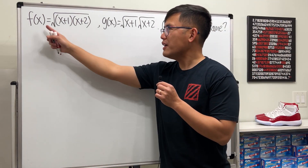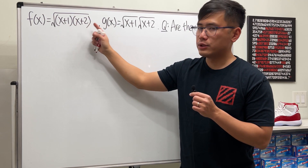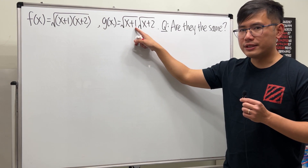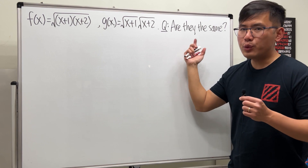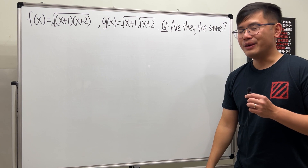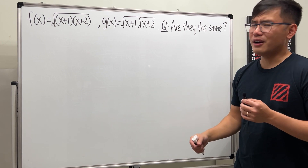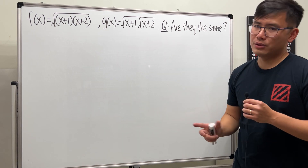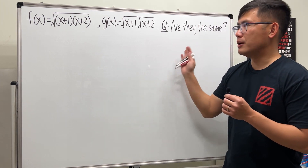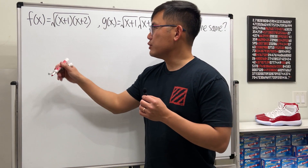We have two functions. The first one is f(x) equal to the square root of (x+1)(x+2). For the second one, g(x), we have two square roots: the first with x+1 inside and the second with x+2 inside. The question is: are they the same function? You have to be really careful with these kinds of questions. We need to pay attention to the technical details, especially the domain.